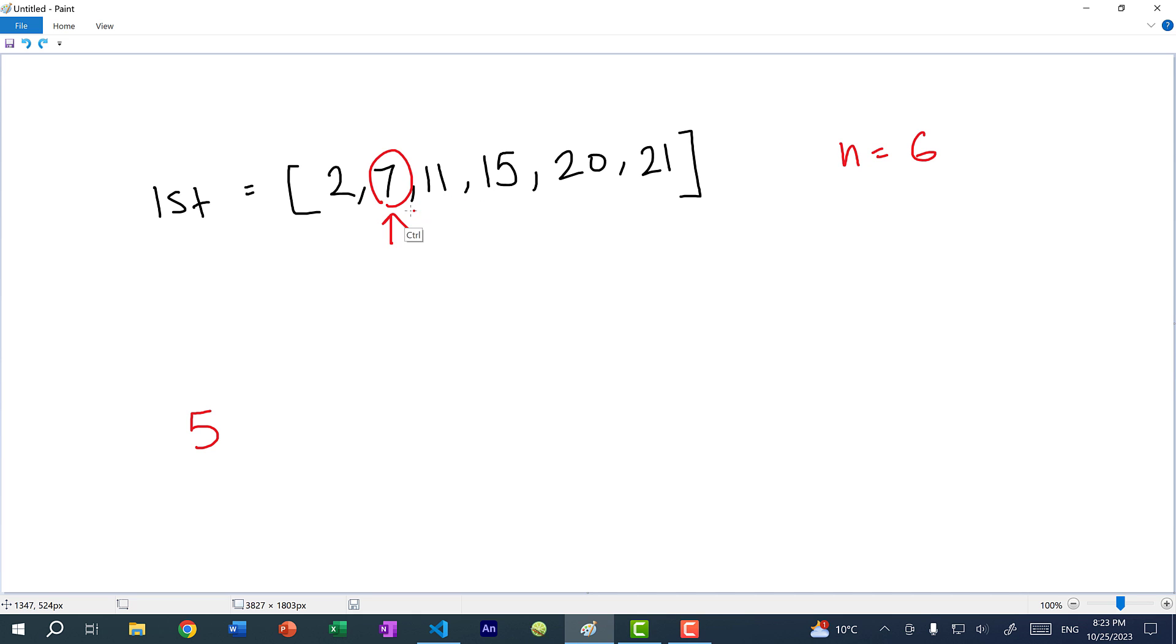Then the next iteration we have 7, so we have 7 and 11, 7 and 15, 7 and 20, 7 and 21, and we have four combinations. Next we have 11, and that is 11 and 15, 11 and 20, 11 and 21, so that is three combinations. Then with 15 we have two combinations, and with 20 we have one combination. You can see each iteration is different. We have different number of combinations, but they're going in descending order.